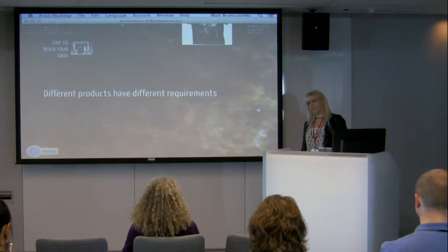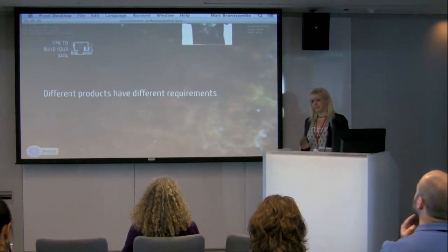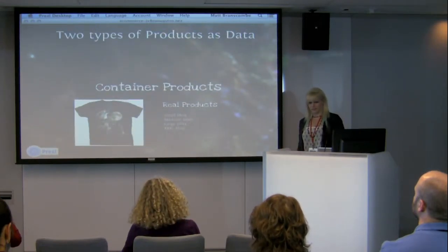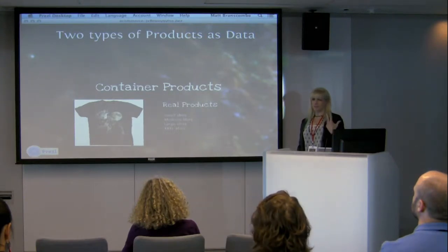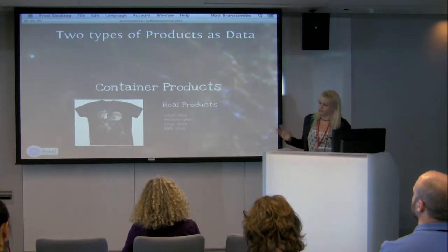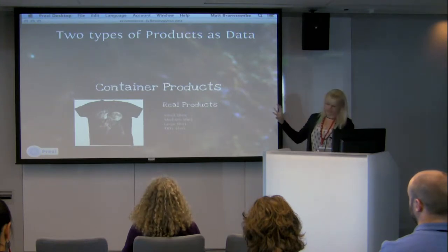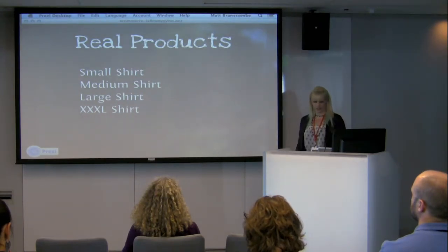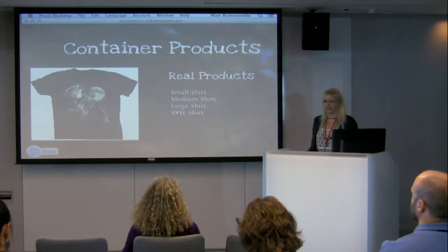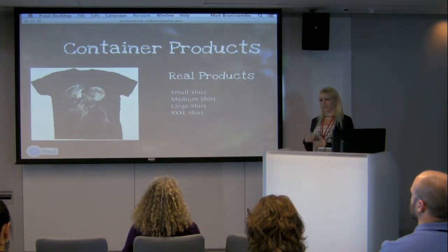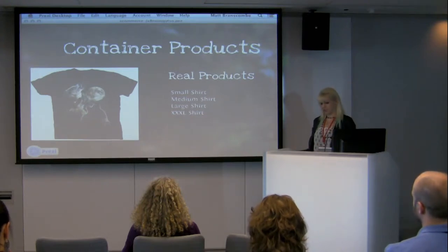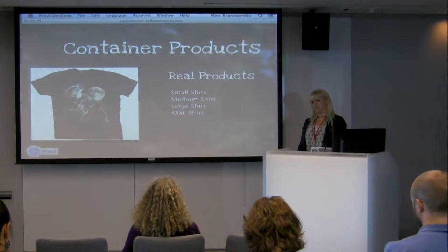Different products have different kinds of requirements — they all interact and work in the database differently depending on the type: subscriptions, variable products, simple products. We have two basic types: real products, which are the actual physical products that you count inventory for — the small shirt, medium shirt, large shirt — and then something called a container product. The container product would be 'the t-shirt.' You sell a t-shirt in small, medium, large, but the t-shirt itself is not an actual product — you don't count inventory for it, you don't ship it. You ship the medium t-shirt. Once you wrap your head around this idea, it makes everything else a lot easier.